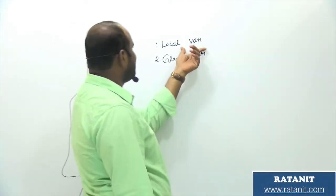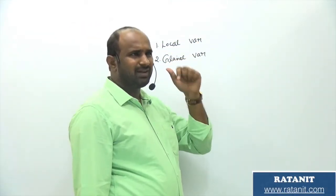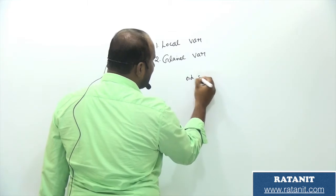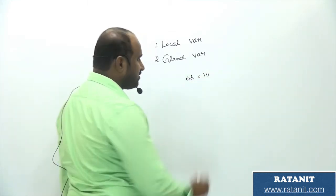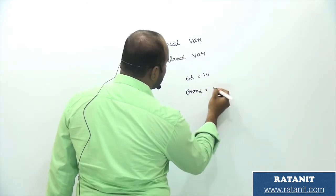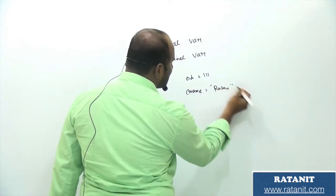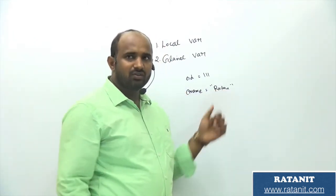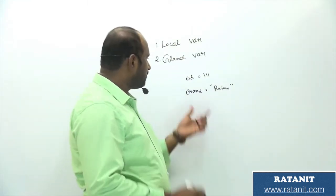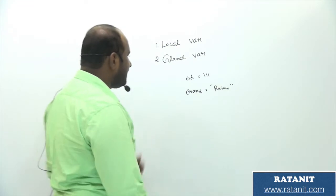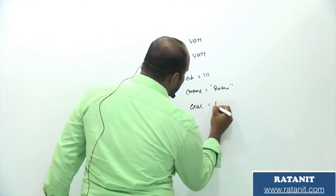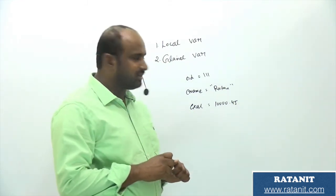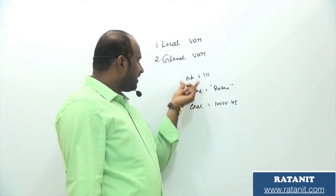The variables which are declared inside the function are called local variables. I said Python is a dynamically typed language. What do you mean by dynamically typed language? No need to specify the type. For example, EID equals 111 — then EID is integer type. E_name equals a string in double quotes — then E_name is string type. We can declare strings within single quotes or double quotes, no problem. So EID, E_name, E_cell — where E_cell is assigned a float value like 10000.4 — these are called variables.